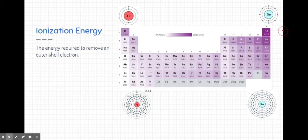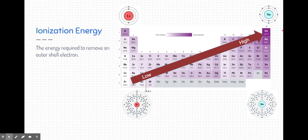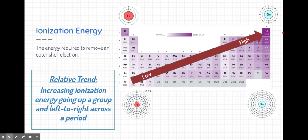But if you take a look at this trend, typically the higher the ionization energy, the more in the upper right-hand corner the elements are. And the lower the energy, the more in the lower left-hand corner. So the trend, as you see here, is increasing ionization energy going up groups and going from left to right across a period.